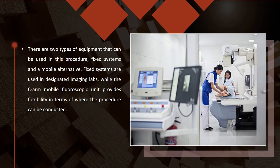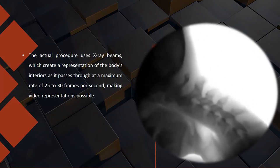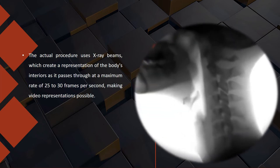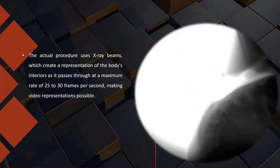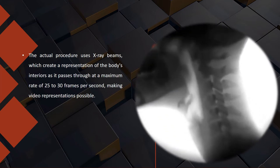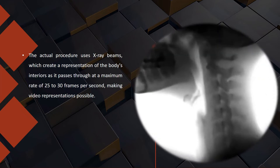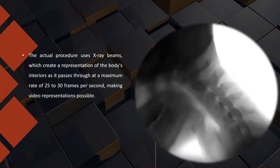There are two types of equipment that can be used in this procedure: fixed systems and a mobile alternative. Fixed systems are used in designated imaging labs, while the C-arm mobile fluoroscopic unit provides flexibility in terms of where the procedure can be conducted. The actual procedure uses x-ray beams which create a representation of the body's interior at a maximum rate of 25 to 30 frames per second, making video representations possible. The output passes through specialized equipment that intensifies and brightens the images before they are transmitted to a fluorescent screen.